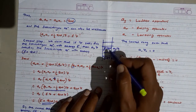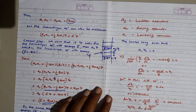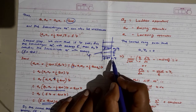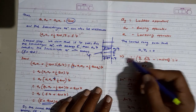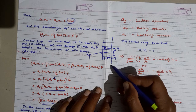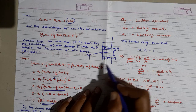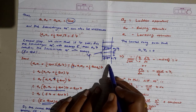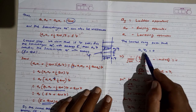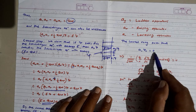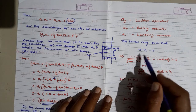If we apply a₋ repeatedly we will reach the lowest rung of the ladder, where no further lowering is possible — no lower states are available. The lowest rung is such that when we operate a₋ on that wave function ψ₀, the result is zero: a₋ψ₀ = 0.